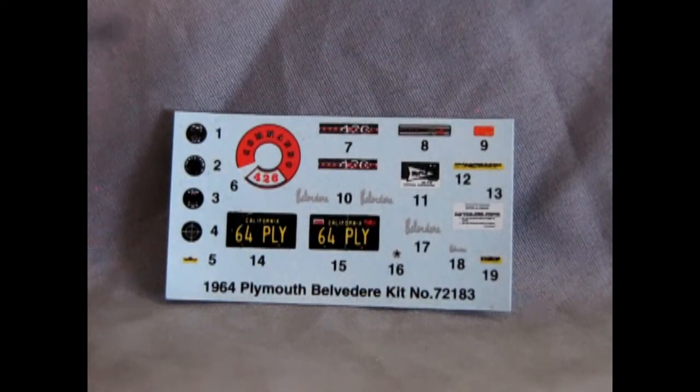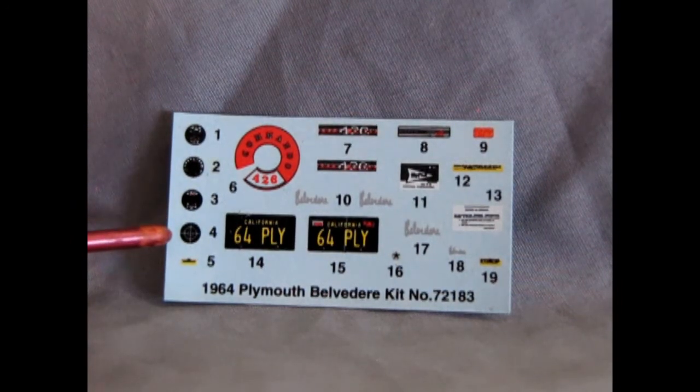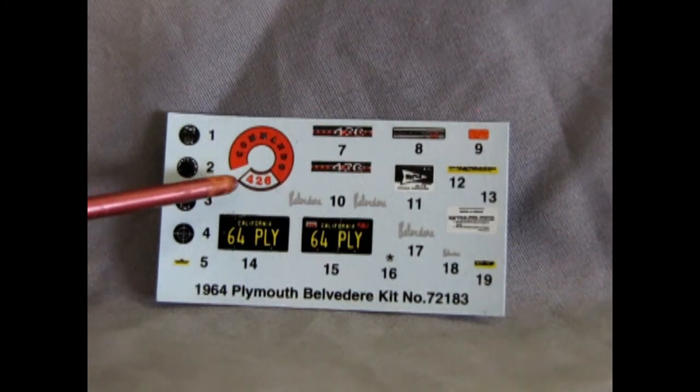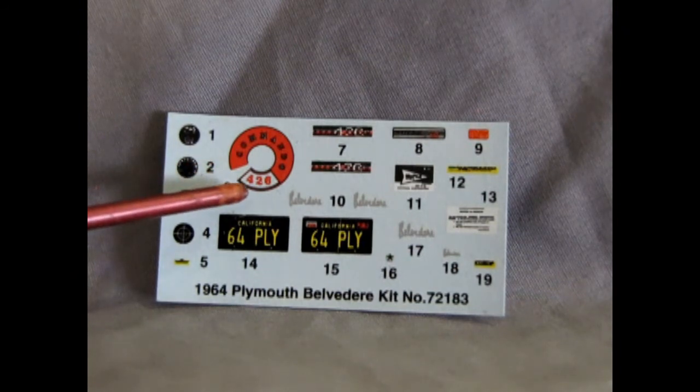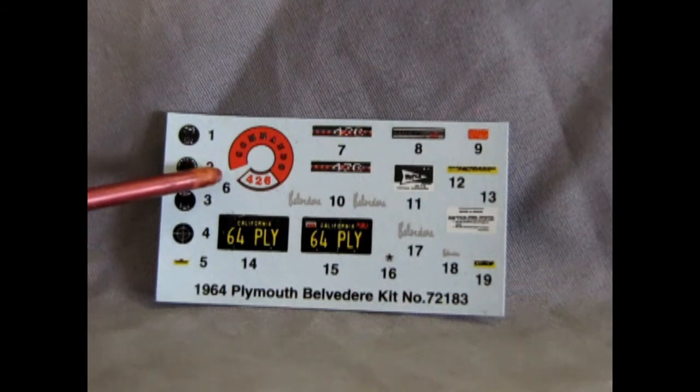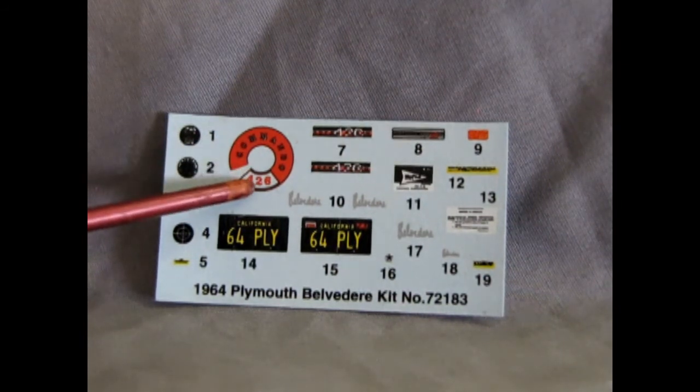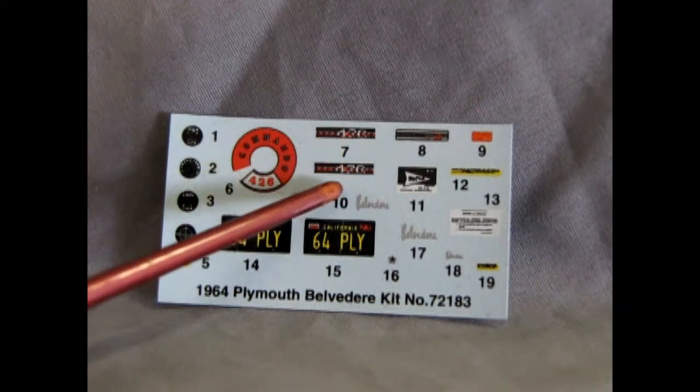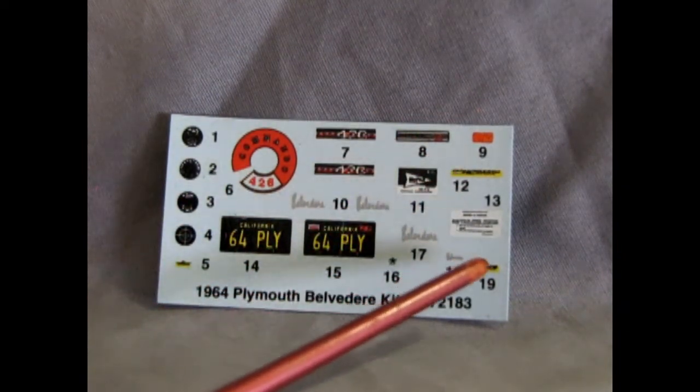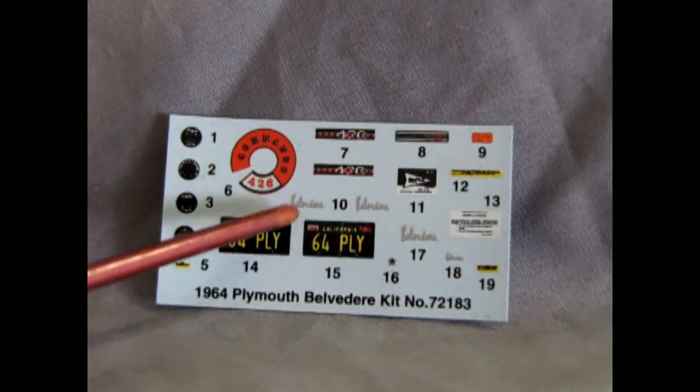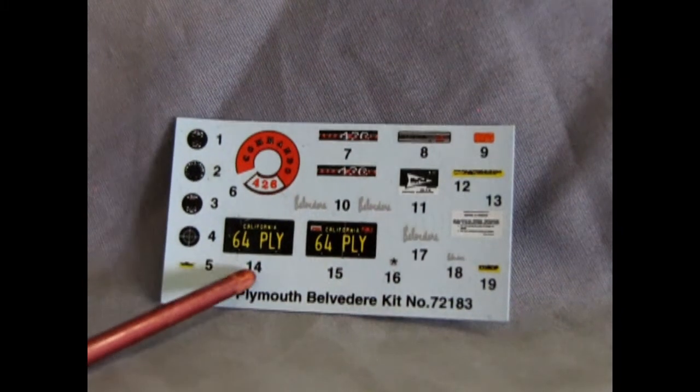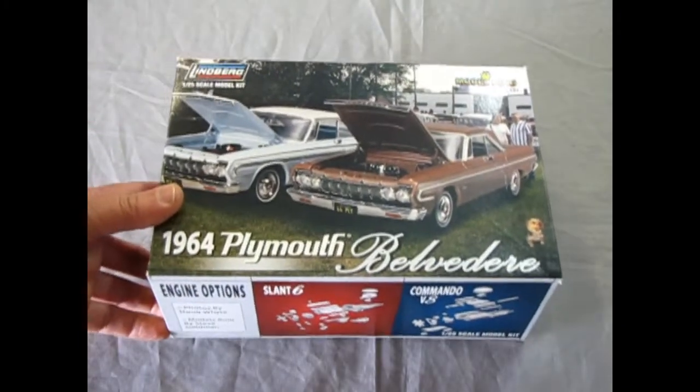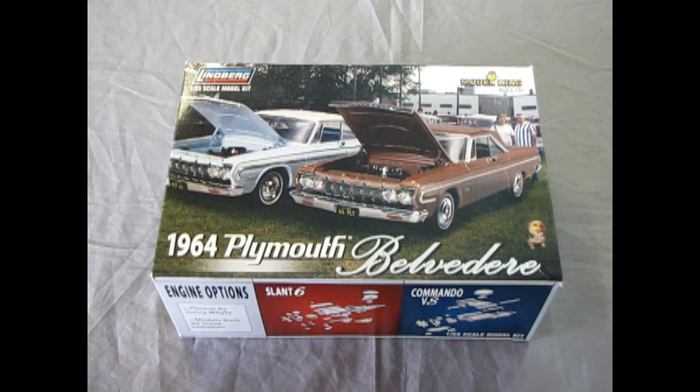And our final component here is the decal sheet. And they do have the gauges here that you can put into that instrument cluster. The nice Commando 426 air cleaner insert. Now notice that it's got the little pie-shaped cut out of it. So when you lay this decal out, make sure you cut in this area really nicely with a sharp hobby knife. It should touch there to there, which will give it that dome shape that it needs. Then we have some nice 426 decals that will go on your valve covers, as well as a bunch of underhood bits here and there. And then you actually have script on there, as well as these very vintage 64 Plymouth California license plates. And that completes our review of the Lindberg Model King 1964 Plymouth Belvedere.